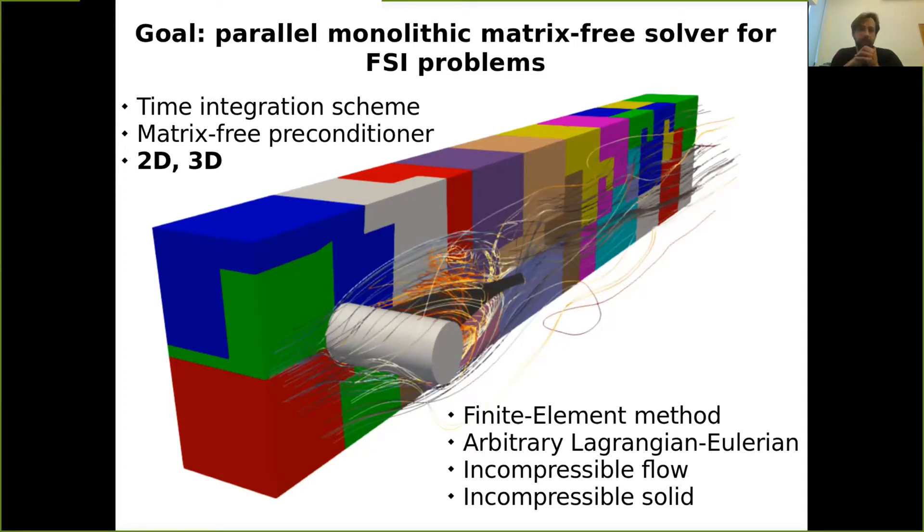So to settle down the scope of this presentation, I will be talking about a monolithic approach in the ALE frame of reference. Finite element discretization, of course. I will be considering compressible flow, incompressible solid. So the compressible flow is quite crucial because of stability reasons. There are some issues. 2D, 3D cases, in PhD there are only 2D, but it's worked as well in 3D.